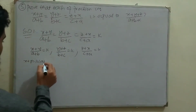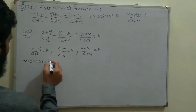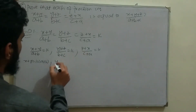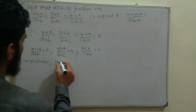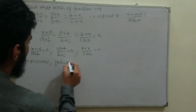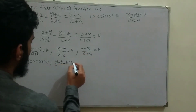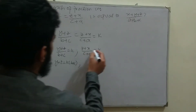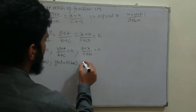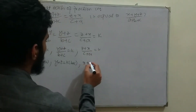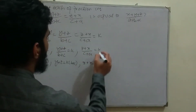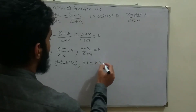Shifting denominators to the right-hand side: x+y = k(a+b), y+z = k(b+c), and z+x = k(c+a).